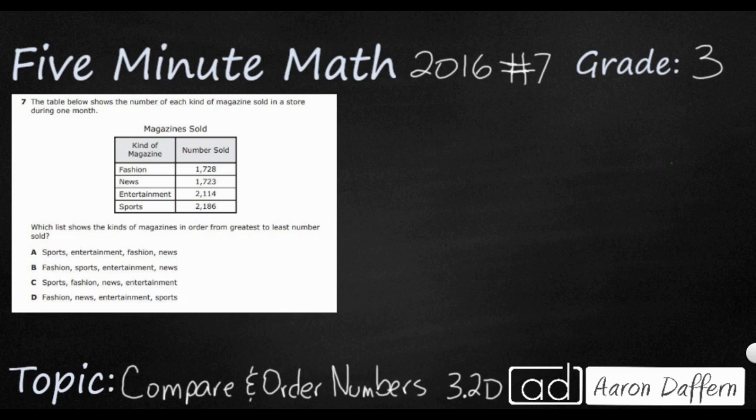This is a fairly straightforward problem. The table below shows the number of each kind of magazine sold in a store during one month. We have the names: fashion, news, entertainment, and sports, with four different numbers in the 1,000s or 2,000s. We're only dealing with four place values here.